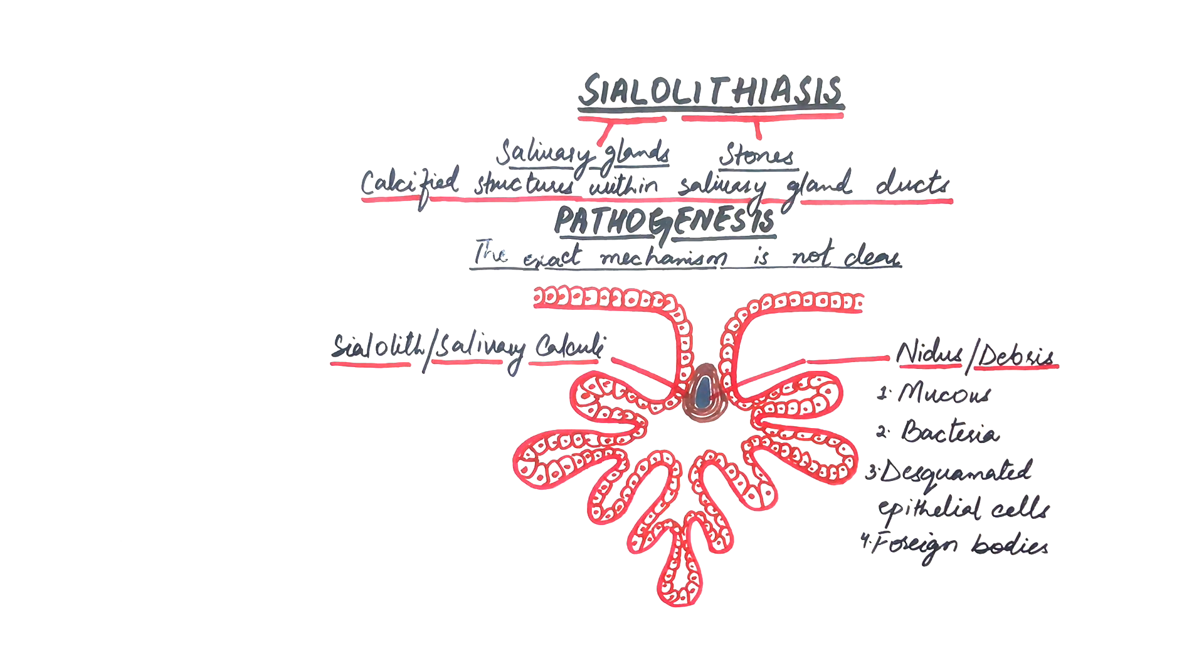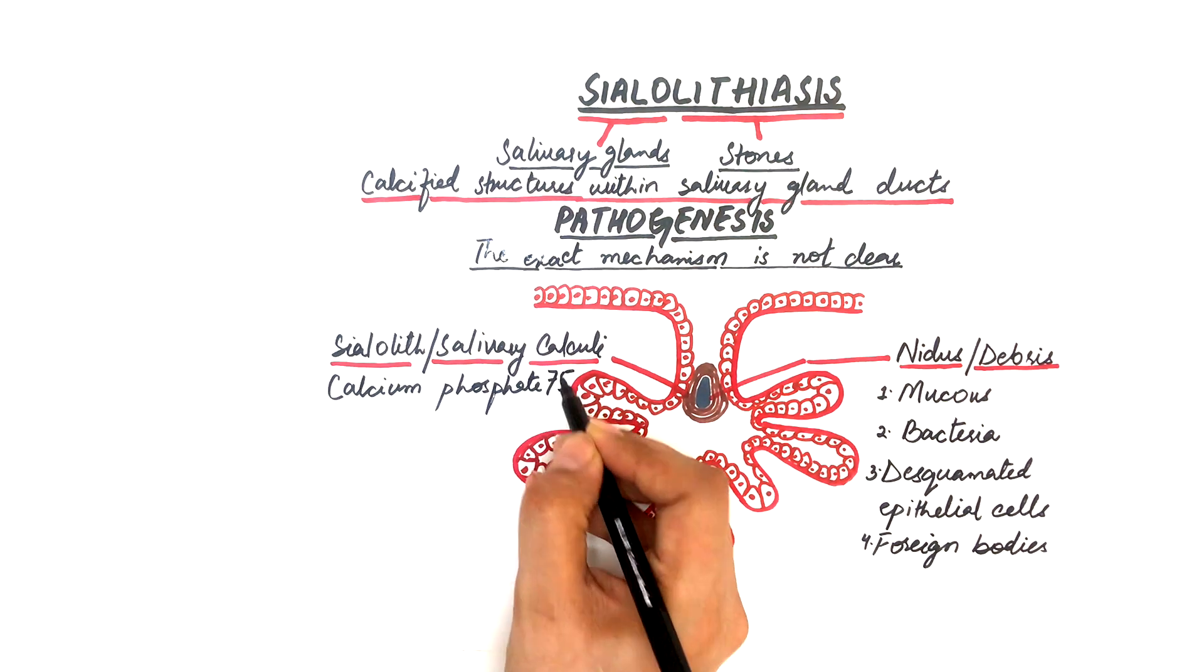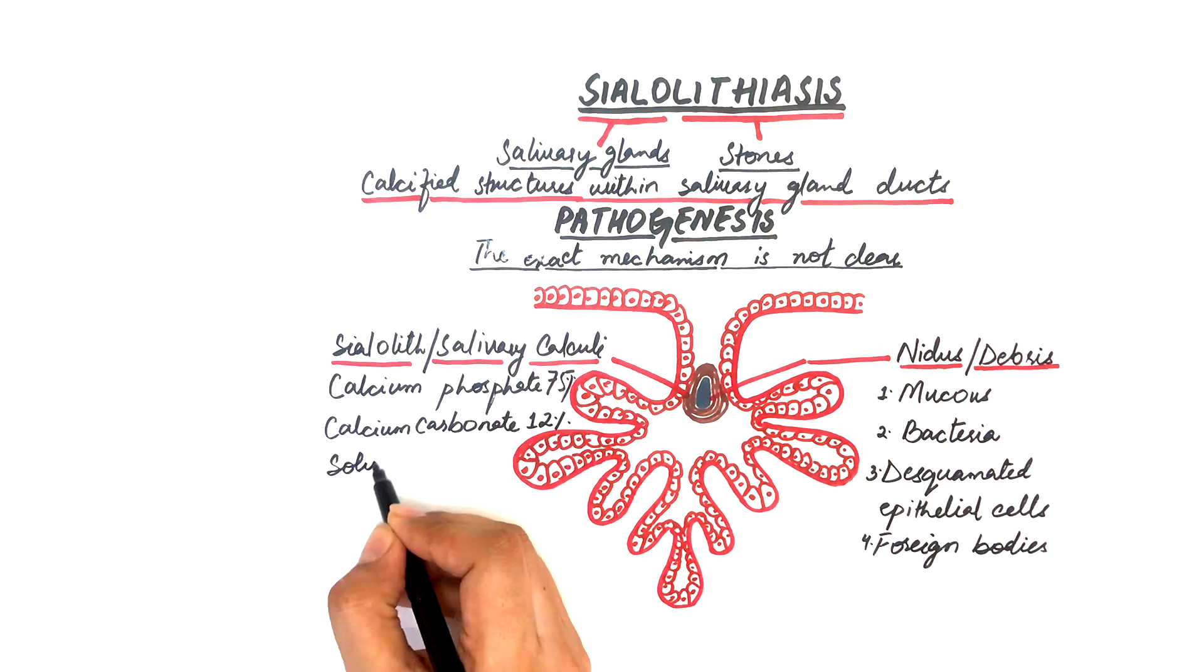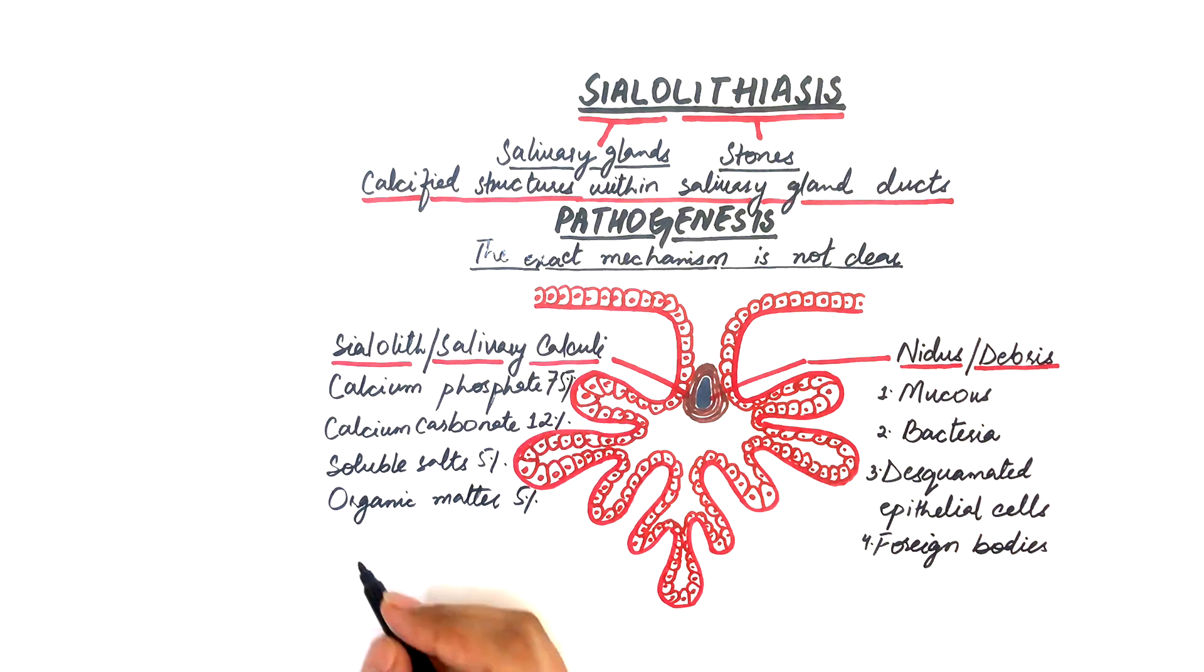The major composition of a sialolith is calcium phosphate, which accounts for 75%, calcium carbonates for 12%, soluble salts and organic matter for 5%, and 3% water.